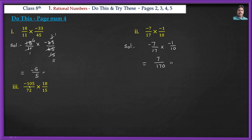Next problem: (-105/72) × (18/15). We cancel: 15 goes into 105 — 15×7=105. 18 goes into 72 — 18×4=72. After cancellation, the answer is (-7×1)/(1×4) = -7/4.